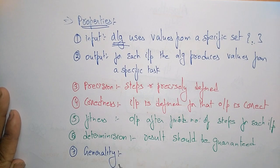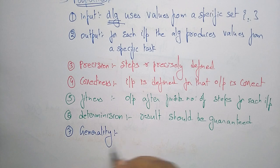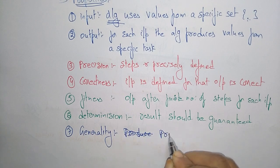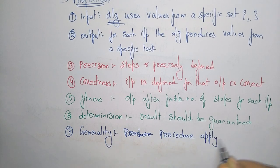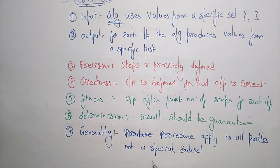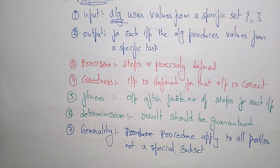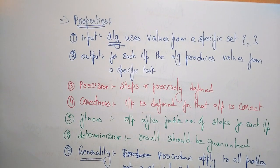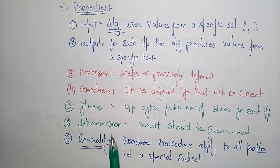Another property of the algorithm is generality. Generality means the procedure is applied to all problems, not just a special subset. Whatever processor you start with at the beginning of the algorithm, that applies to all problems throughout the algorithm, not just a special subset. So these are the different properties of algorithms: input, output, precision, correctness, finiteness, determination, and generality.